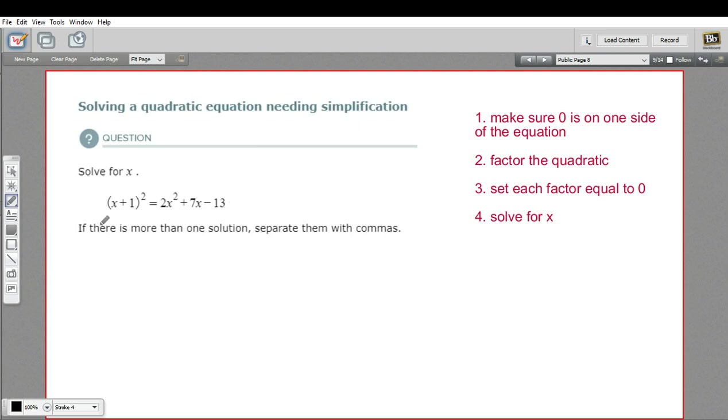But look at this mess over here. We don't have 0 on one side. It is a quadratic because our highest power is x squared, but how do we approach this? Well, the first thing we need to do is just simplify all of this.